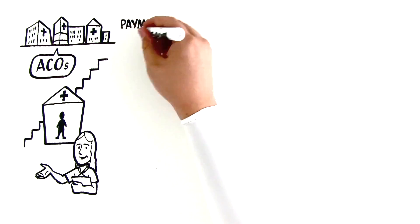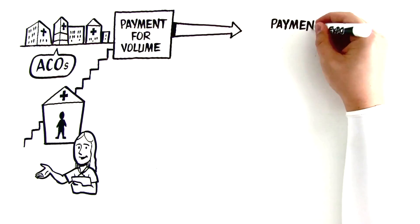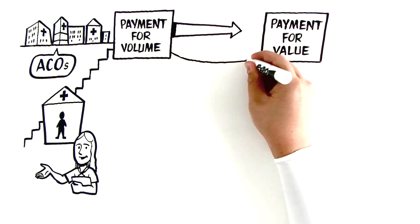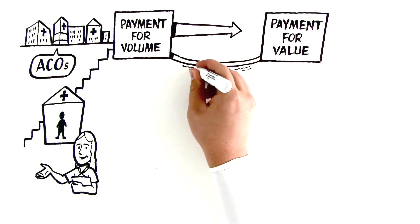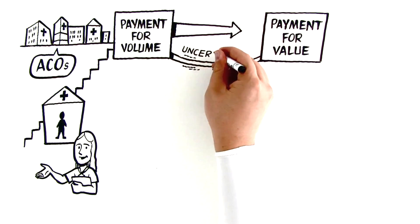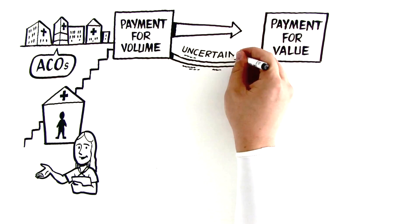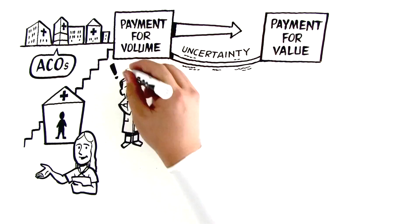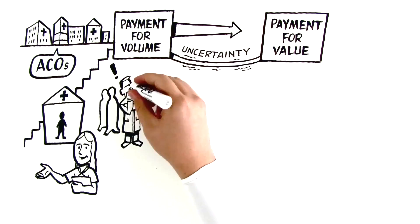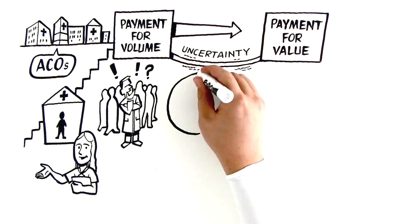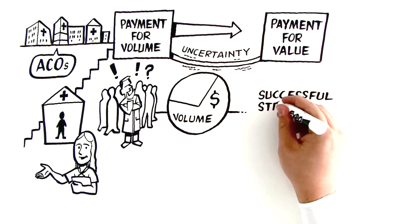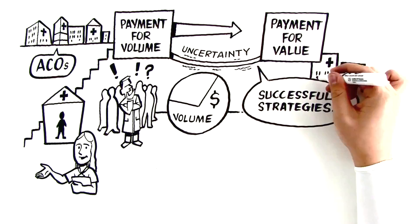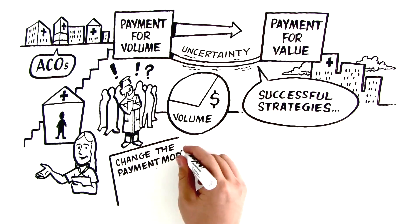To transition from payment for volume to payment for value, health systems need to cross a shaky bridge. It shakes because of the uncertainty created for providers as the payment system changes. Doing what is right for population health has negative financial consequences when a majority of payment remains tied to volume.